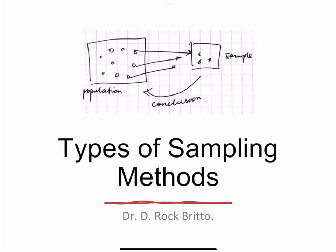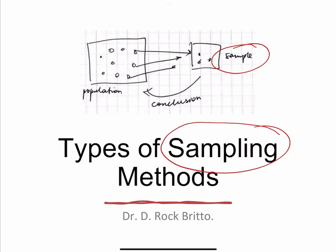Hello all. In this video we are going to discuss about various types of sampling methods. Sampling is the procedure or technique by which the sample required for the research is taken from the population, and after completing the study the results and conclusion will be for the population. We need to have a considerable number in this sample, and this determination is called sample size calculation, and the process by which we select this sample from the population is called sampling.